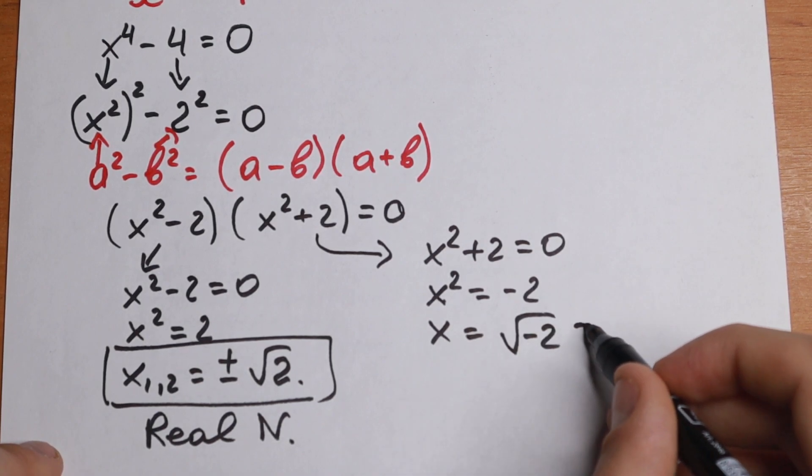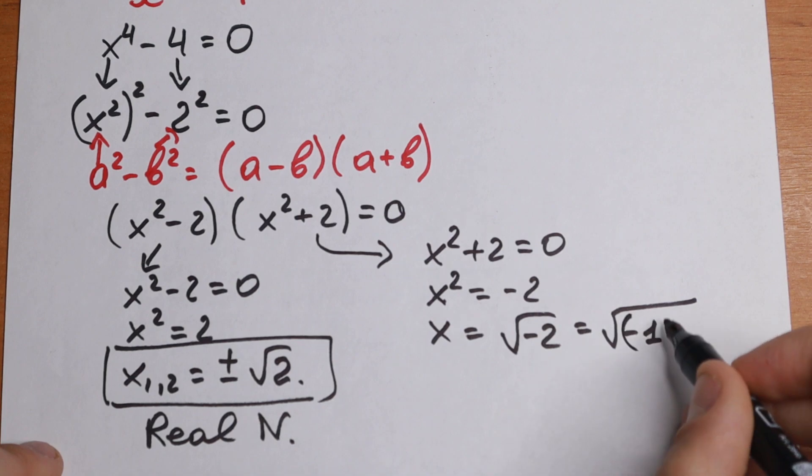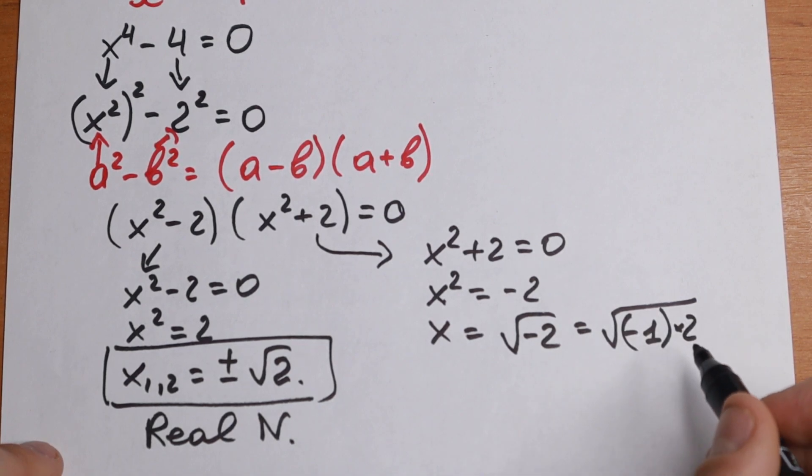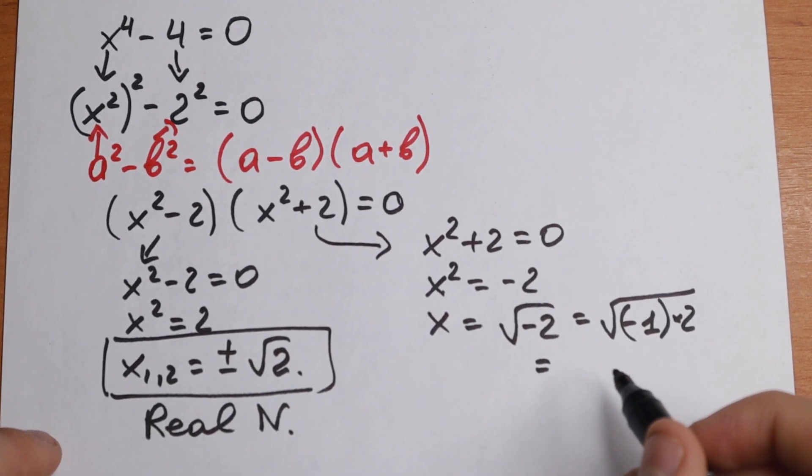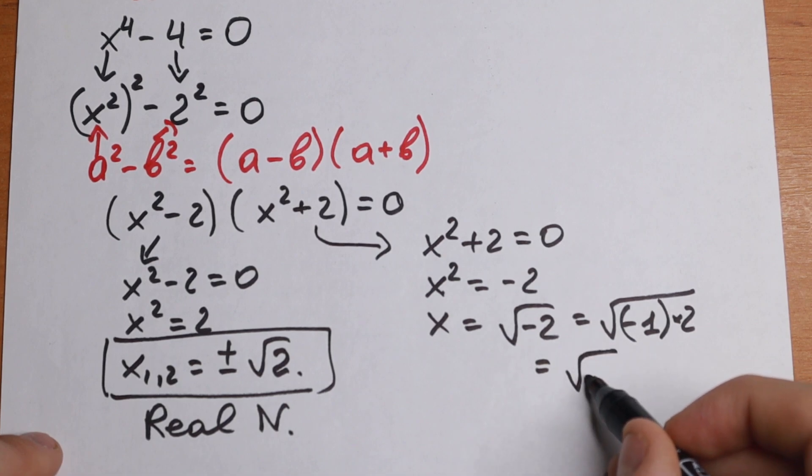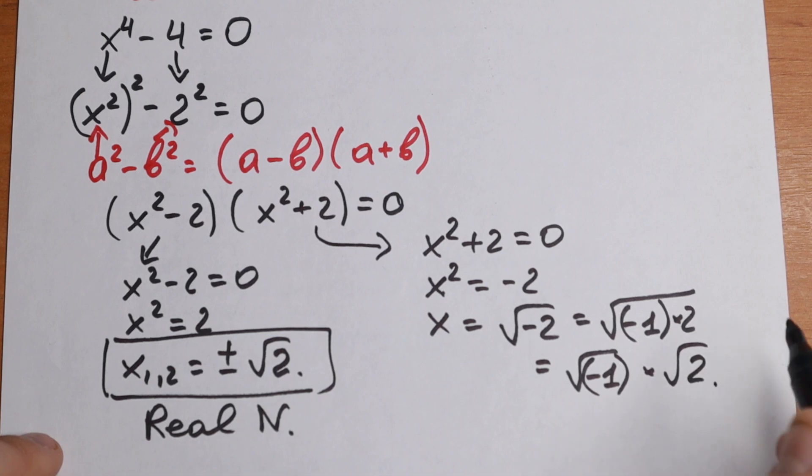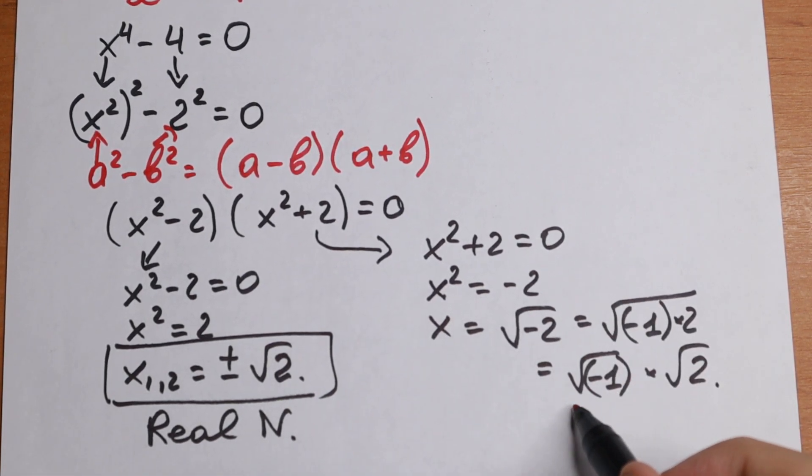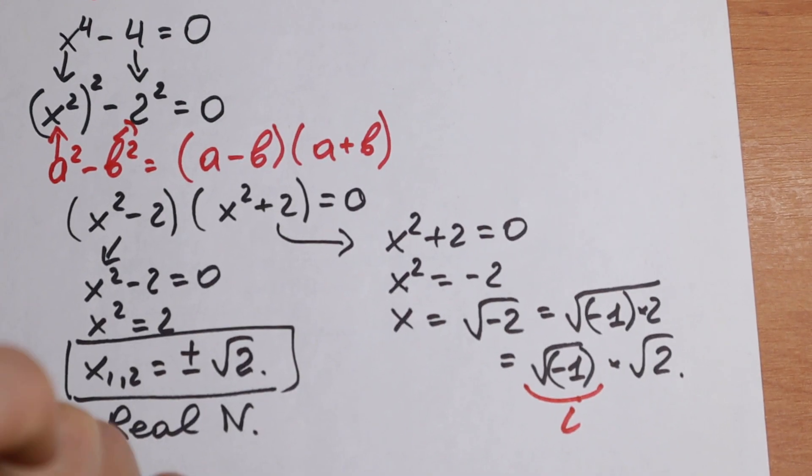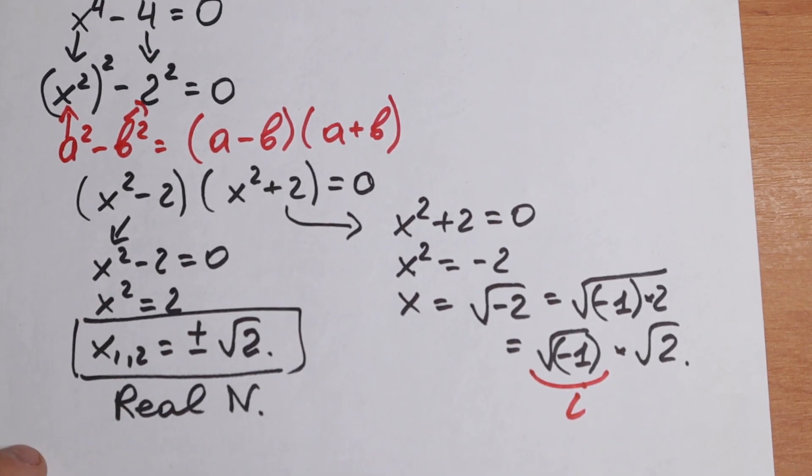And if we rewrite this as square root of minus 1 times 2. And moreover if we know the rule we can separate it and write it as square root of minus 1 times square root of 2. And if we are talking about complex roots we know that square root of minus 1 equals i. And as a result we will have our answer.